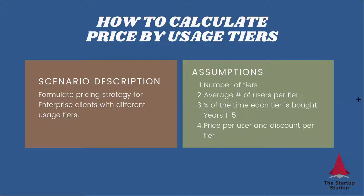What we need to consider here is the number of tiers, the average number of users per tier, the percentage of the time that each tier is bought — years one to five if we're building five-year projections — as well as price per user, undiscounted, and a discount per tier so that we can calculate a proper price.